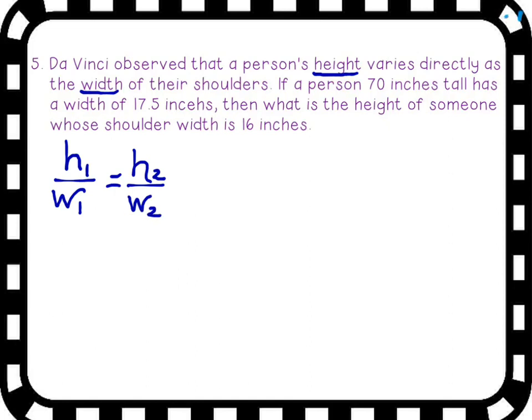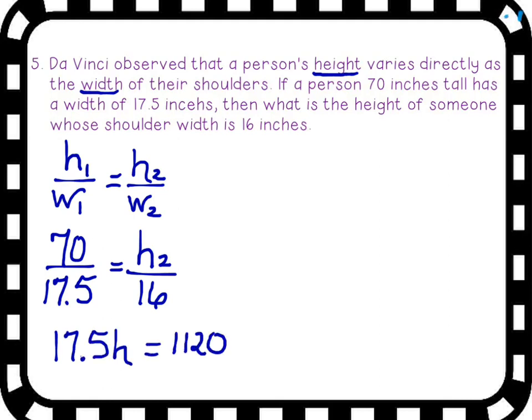And this constant of variation has to be constant. It has to be the same no matter what the numbers are. So if you're missing a number, you can just solve it like an equation. So here we have our cross products are going to be 17.5 times h is equal to 1,120. Divide both sides by 17.5. You get 64 inches. So in other words, a person whose shoulder width is 16 is going to be 64 inches tall. And the ratio there of the height and shoulder width is going to be the same no matter what your stature.